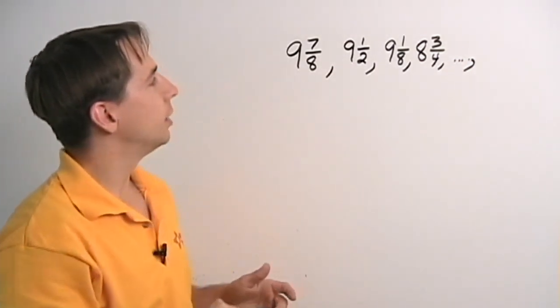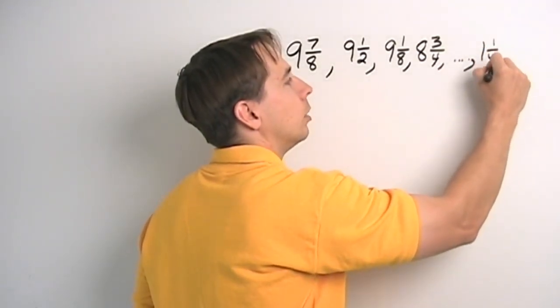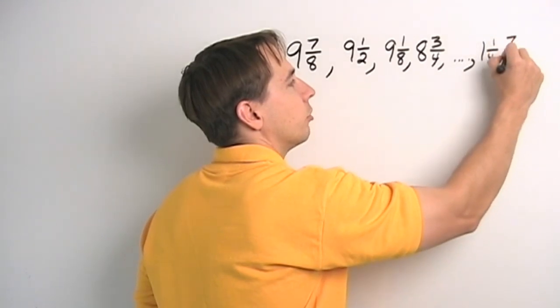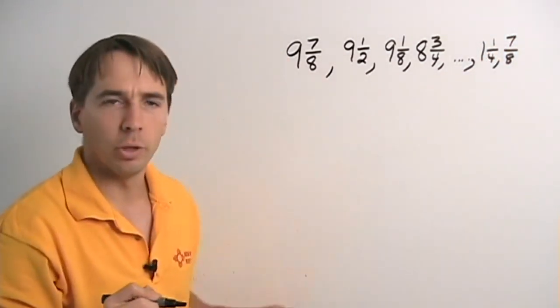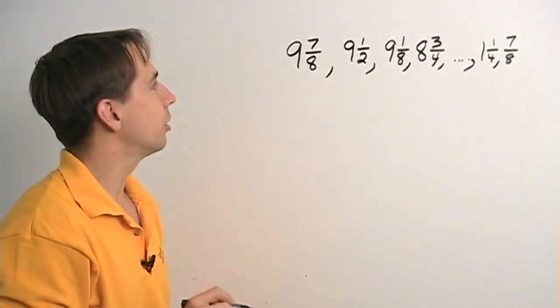So notice we're just going down by 3/8 each time. And we'll just keep on going, and we'll end it, let's see, our last two numbers will be 1 and a quarter and 7/8. Those will be our last two numbers. And the question again is, how many numbers are in this list?